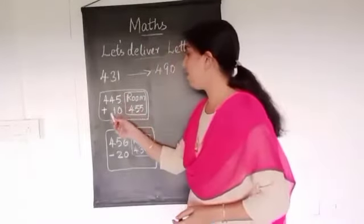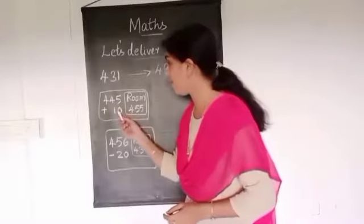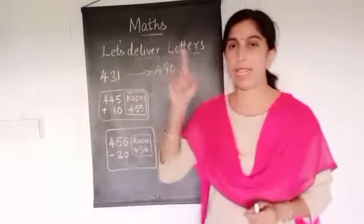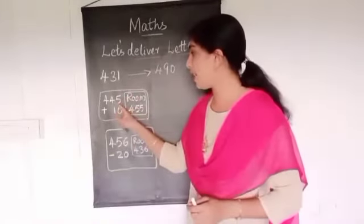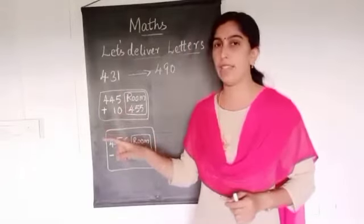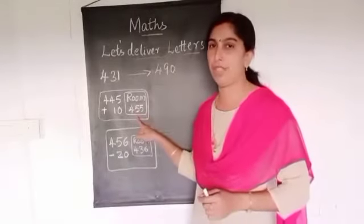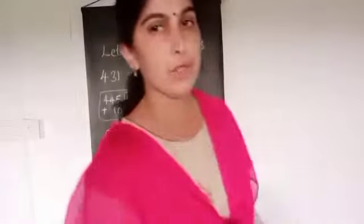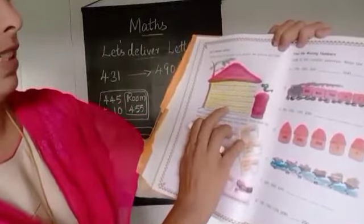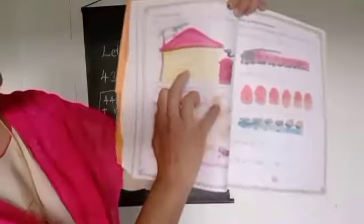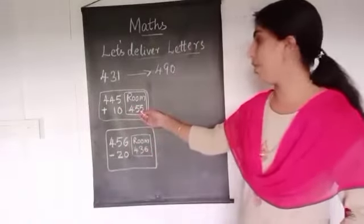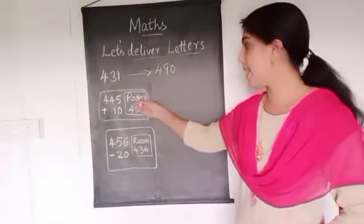I will show you. See, 445 plus 10. In your number chart, you can remember — 445, the next 10 is 455. So you got the number 455. You can remember your number chart, or otherwise you can see from here. 445 is here, then next 10 is here — 455. So 455 you want to write here in this card.